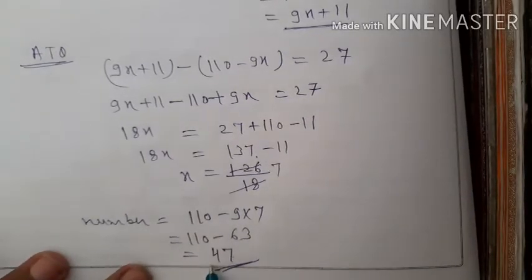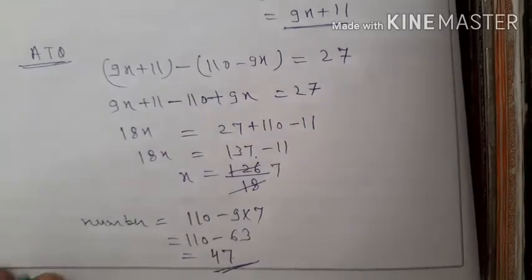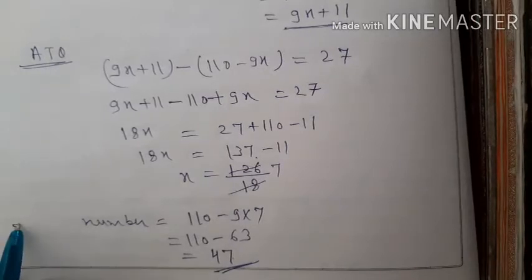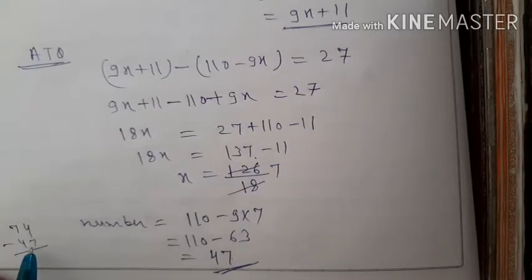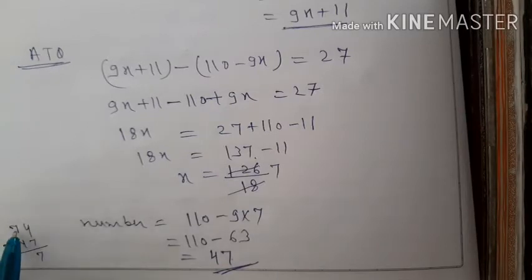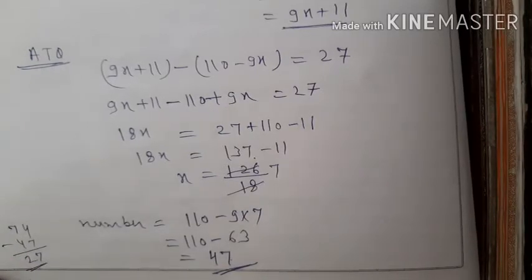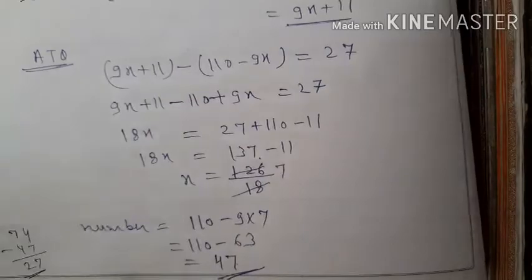We can also verify: reversing the digits of 47 gives 74. Subtracting the original number: 74 minus 47 equals 27. The difference is 27, which confirms the answer is correct.